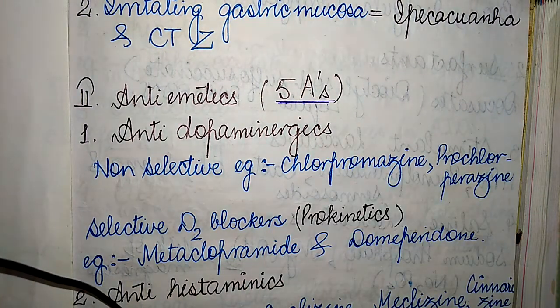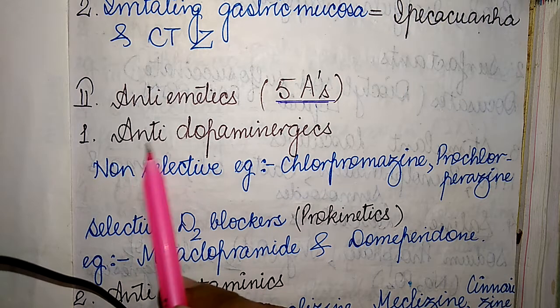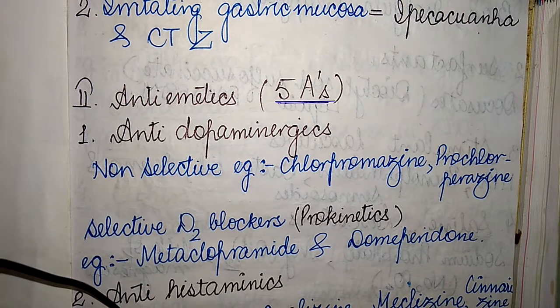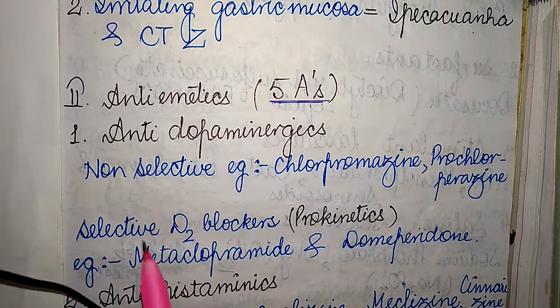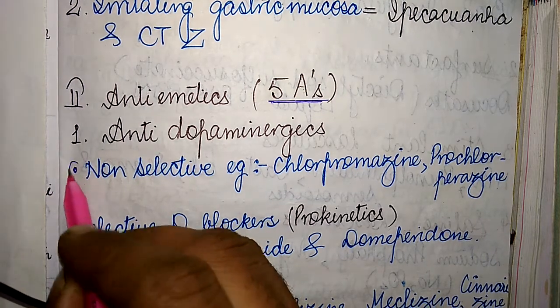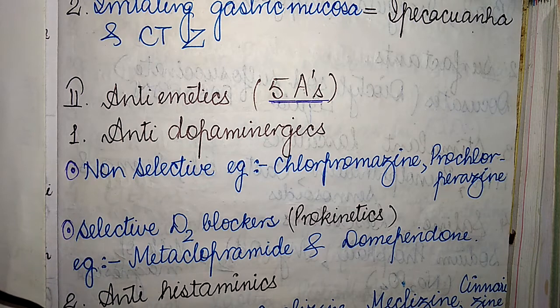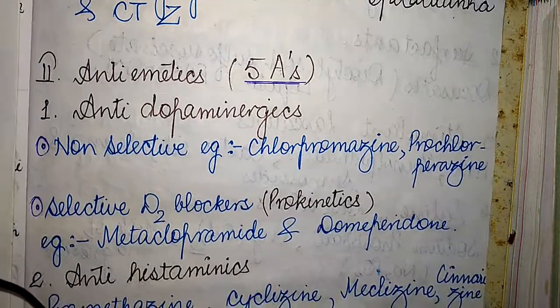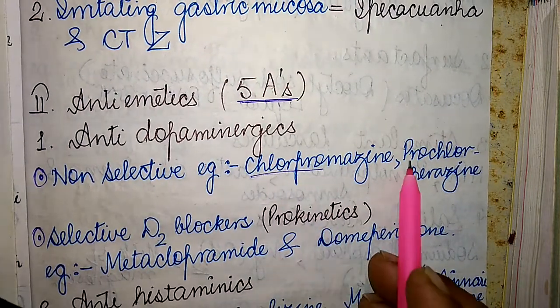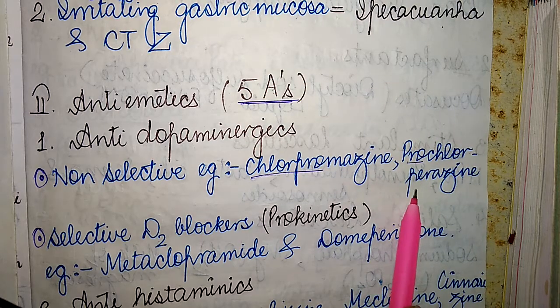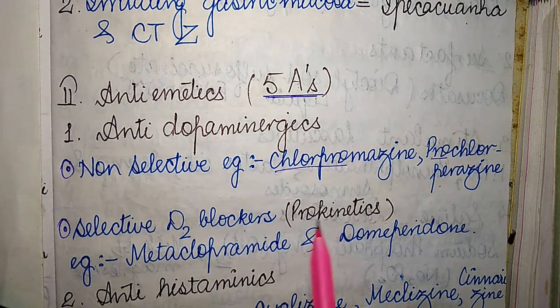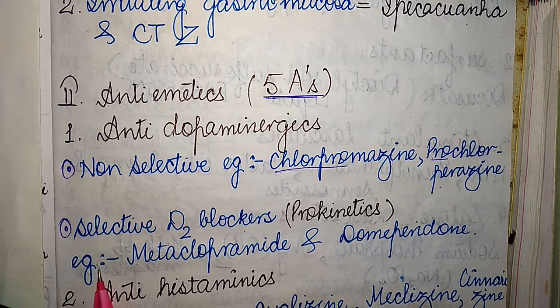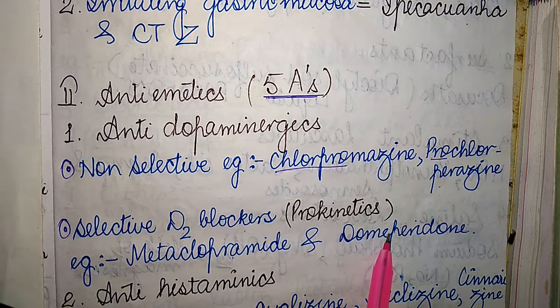The first A refers to anti-dopaminergics, which are divided into two categories: non-selective and selective D2 blockers. Non-selective anti-dopaminergics include chlorpromazine and prochlorperazine. Selective D2 blockers, also called prokinetics, include metoclopramide and domperidone.